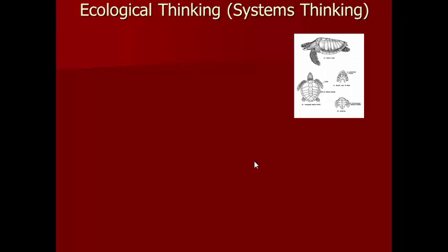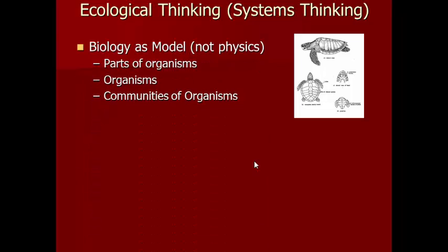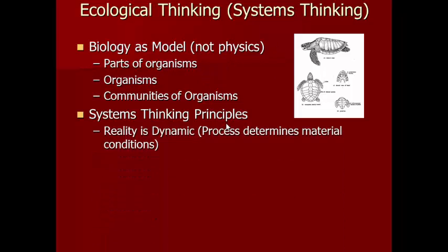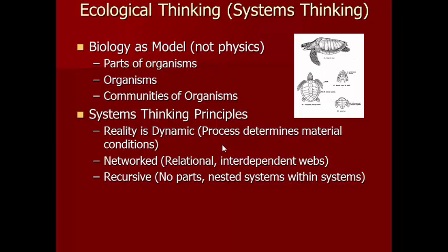Now stepping a little further away from the strictly biological use of the term toward ecological or systems thinking more broadly. Systems thinkers see biology as offering a different model than physics. Biology shows systems nested within systems — parts of organisms, organisms, communities of organisms — giving you a way to think about how all these things fit together. In contrast, physics is more like this thing hits that thing with no systemic properties.